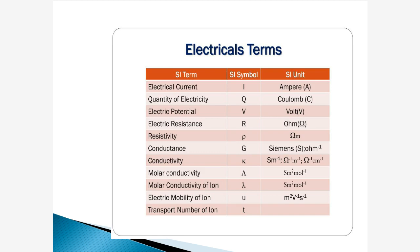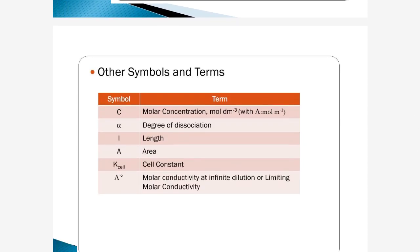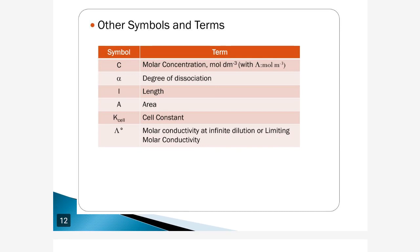Now see all these symbols, names, and terms. Other important symbols: C for molar concentration, with units of mole per decimeter cubed or mole per meter cubed. Alpha (α) is the degree of dissociation, important in ionization. L is length, A is area. KCl is the cell constant. Lambda zero (Λ⁰) is the molar conductivity at infinite dilution, also called limiting molar conductivity — lambda is written as a capital letter.